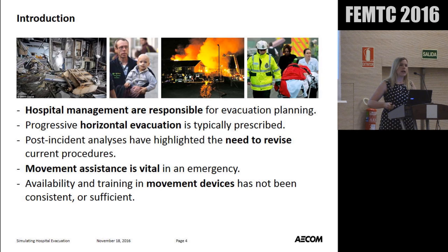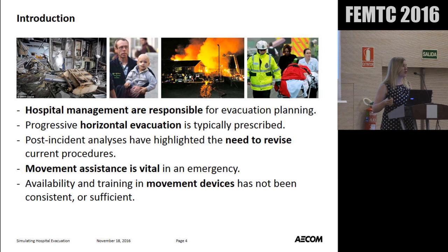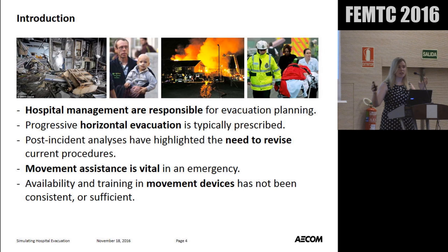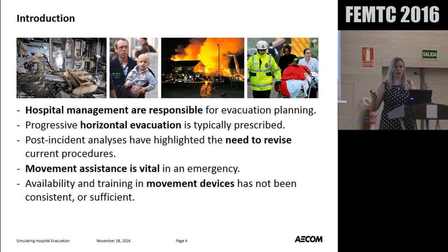The way this is planned for is that hospital management themselves are solely responsible for evacuation planning. In the UK, it's entirely the responsibility of hospital management; they can't rely on fire and rescue services. They have to demonstrate that using their own staff only, they can evacuate an entire building. A number of procedures are prescribed. For example, progressive horizontal evacuation — the idea that you can move people progressively from compartment to compartment, from fire-resistant compartment to fire-resistant compartment horizontally away from the danger, evacuating those in immediate danger first regardless of any other attribute.